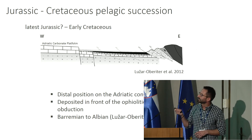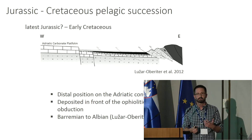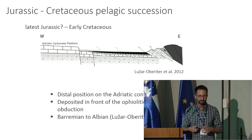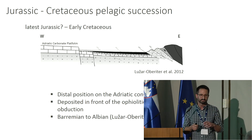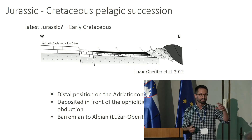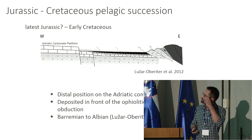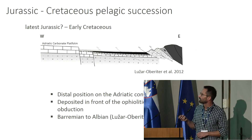Some dating was done for these turbidites — Barremian to Albian — however it was done with zircon fission track and wasn't done systematically in the section; it was only sampled randomly. So it is possible that these deposits are even older.